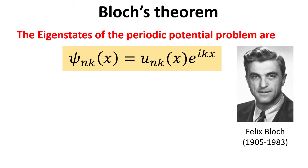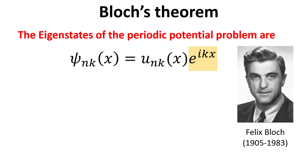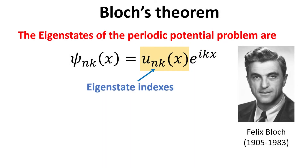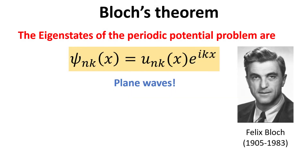Having defined and discussed periodic potentials and periodic boundary conditions, we are now in a position to state Bloch's theorem. The eigenstates of electrons in a spatially periodic potential are a product of two pieces: the first is a plane wave characterized by a state index K, and the second is a spatially varying amplitude function U that depends on two quantum state indexes, N and K. Hence, electrons travel in a periodic potential as plane waves with spatially varying amplitudes.